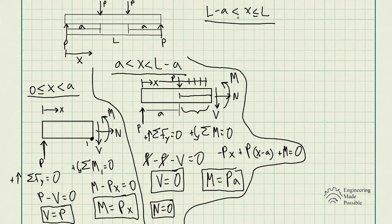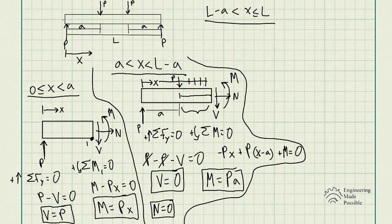Finally, for the third section, X is between L minus A and L. We repeat the same steps, but this time we draw starting from the right-hand side to save time, since there are fewer external forces to analyze. Either approach — starting from the left or the right — will give the same equations for shear and moment.